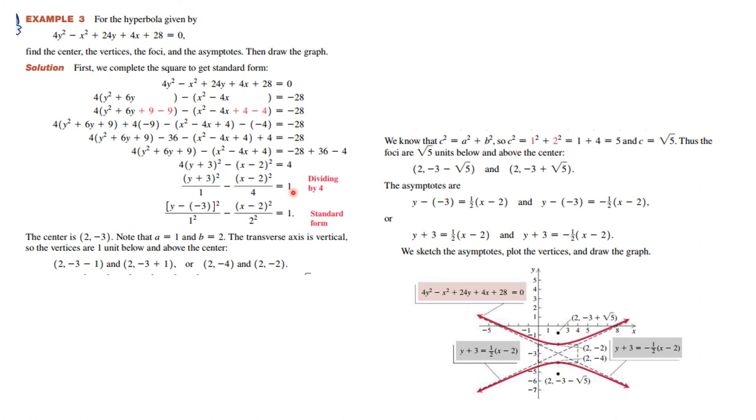So what we get is 4 times y plus 3 whole squared minus x minus 2 whole squared equals 4, and we divide by 4 to get it into standard form. And that means that the center is 2 comma minus 3. We note that the x and y are matched up. A is equal to 1, and b is equal to 2. So the transverse axis is vertical because the y is positive. And we know where the centers are. We also know the vertices. So these are the vertices.